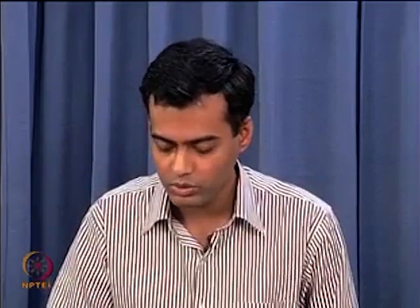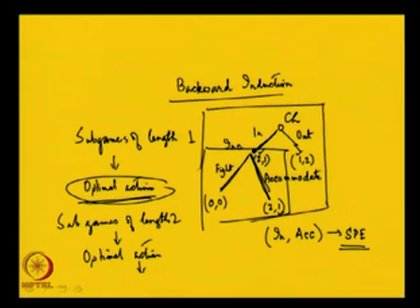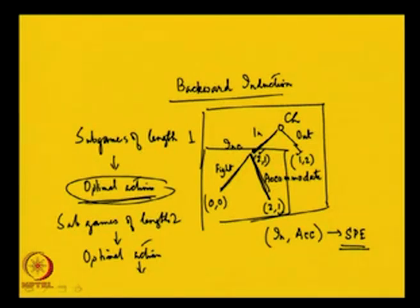Applying this to the entry game: we started with the subgame of length 1 and saw the incumbent's optimal action is to accommodate. Taking accommodate as given, we went back to the subgame of length 2 — the entire game — and saw that given accommodate, player 1 who moves first must get in. So the subgame perfect equilibrium is for player 1 to enter and the incumbent to accommodate.